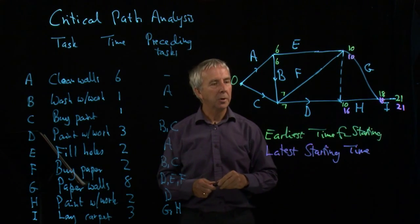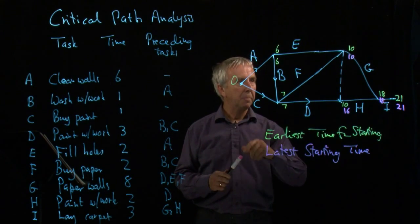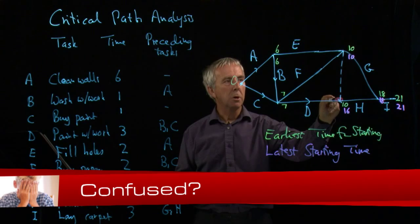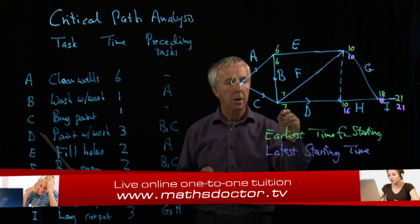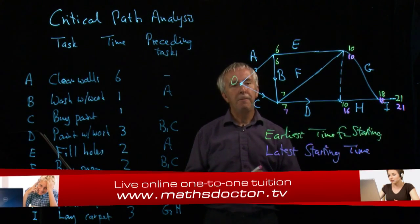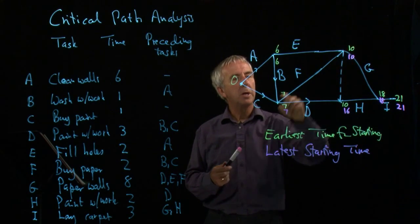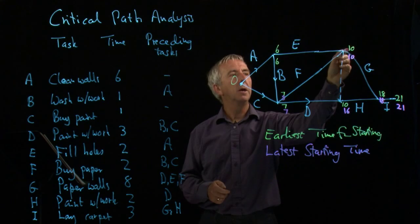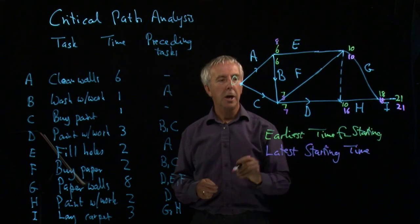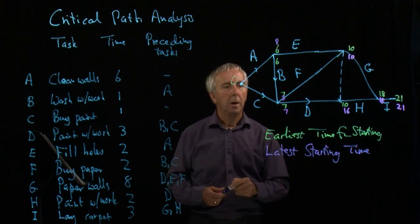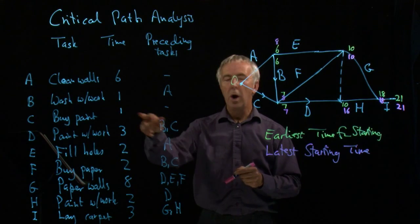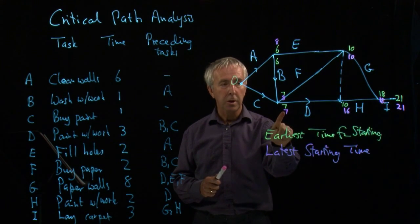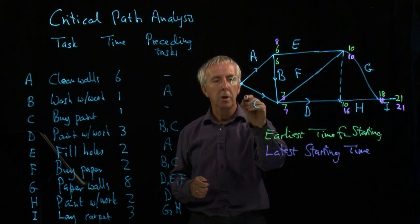Let's now look at D. I need to be here by 10. D takes three, so the latest that D could start is 10 minus 3, which is 7. F takes two, so to be ready here by 10, I didn't need to start until 8. E takes two, so to be here by 10, I didn't need to start E until 8. What about C? C takes one. Now, I'm coming back this way. C needs to be ready by the earliest of these, the seven. C takes one, so it could start as late as 6.